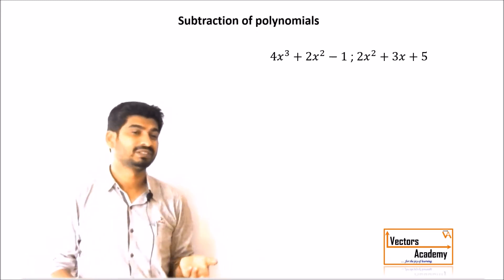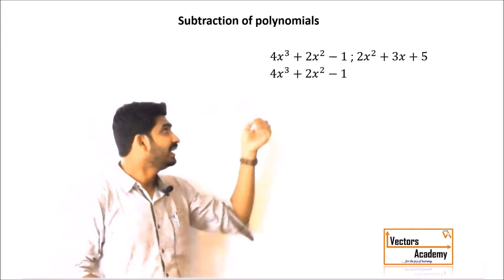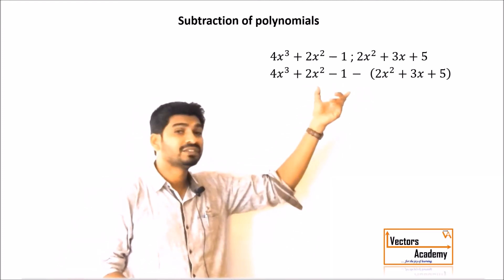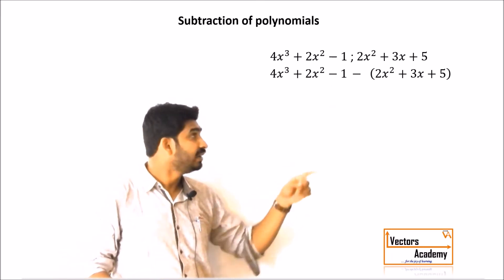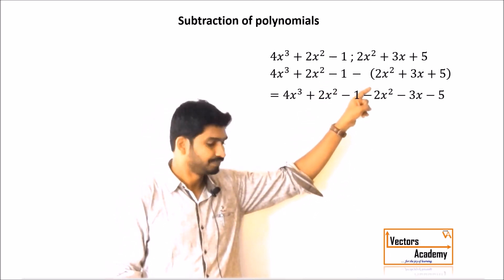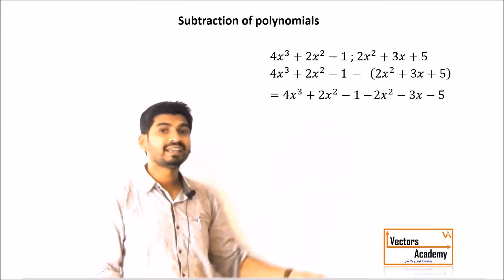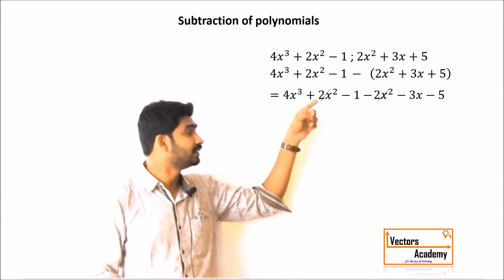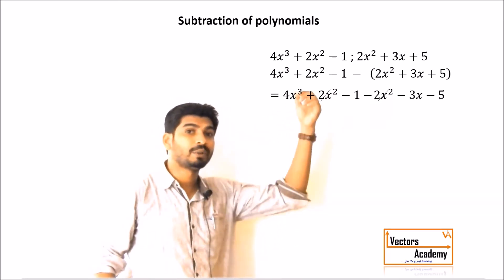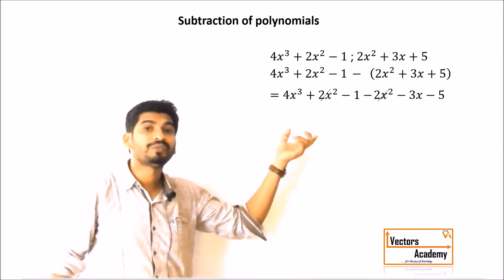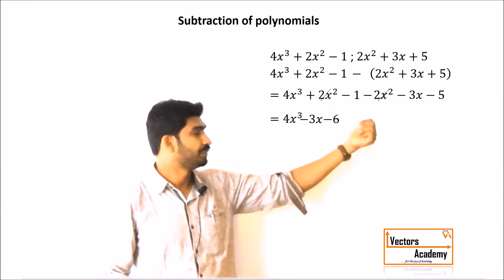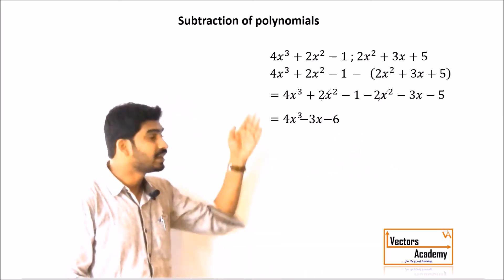Now let us look at how we subtract polynomials. Suppose we need to subtract the same two polynomials. We write the first polynomial, then a subtraction sign, and the second polynomial inside a bracket. That bracket is very important, because when we open it, the sign of all terms in the second polynomial gets changed. So the second polynomial becomes minus 2x² minus 3x and minus 5. We then collect the like terms — for example, 2x² and minus 2x² cancel out, leaving no x² term. We subtract the remaining constant terms to get the final answer.